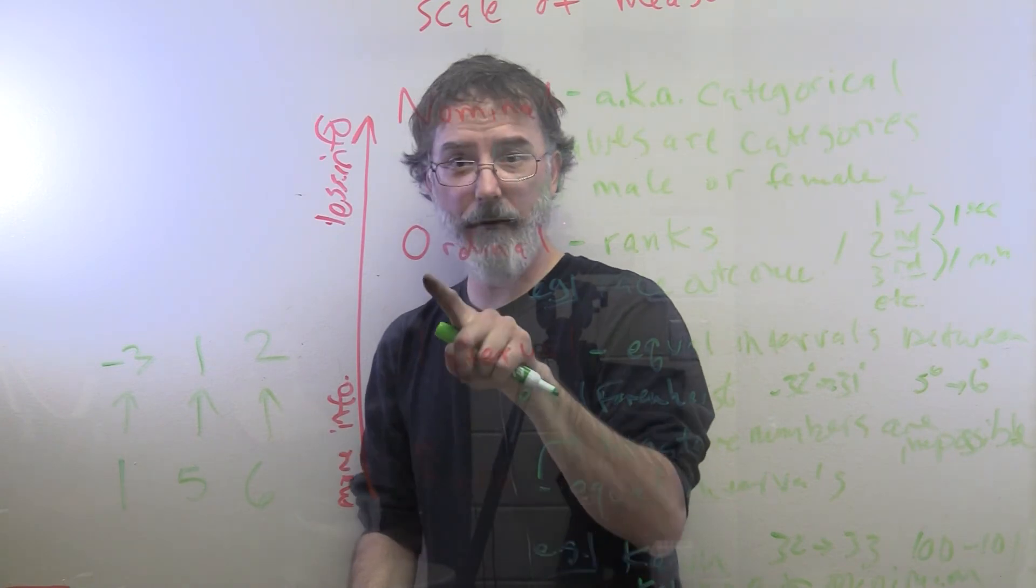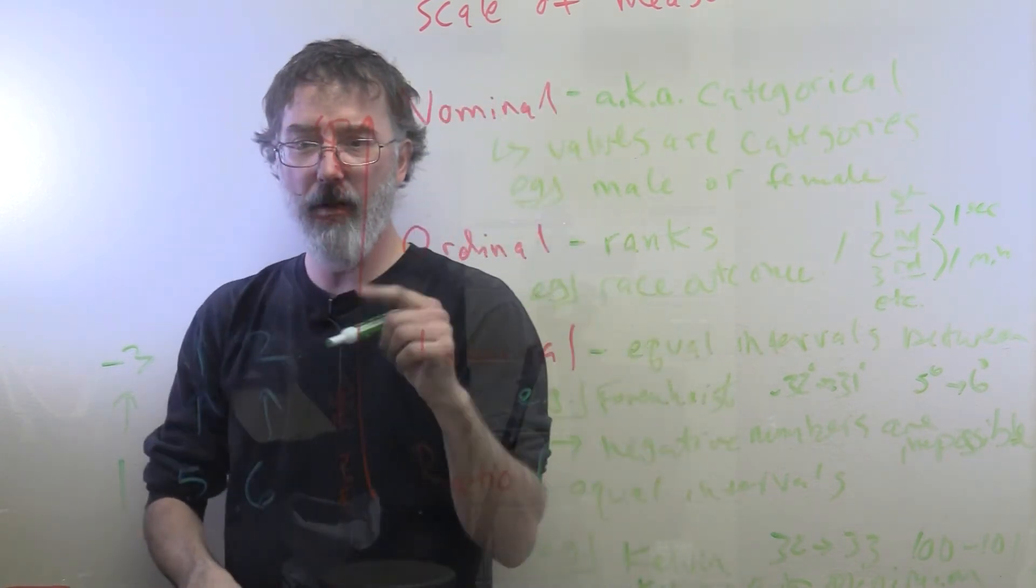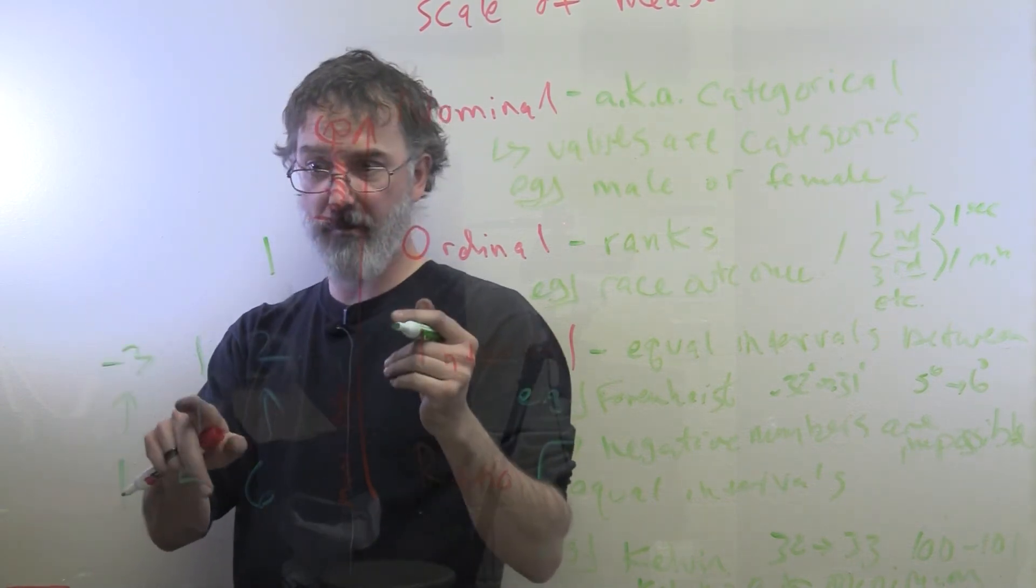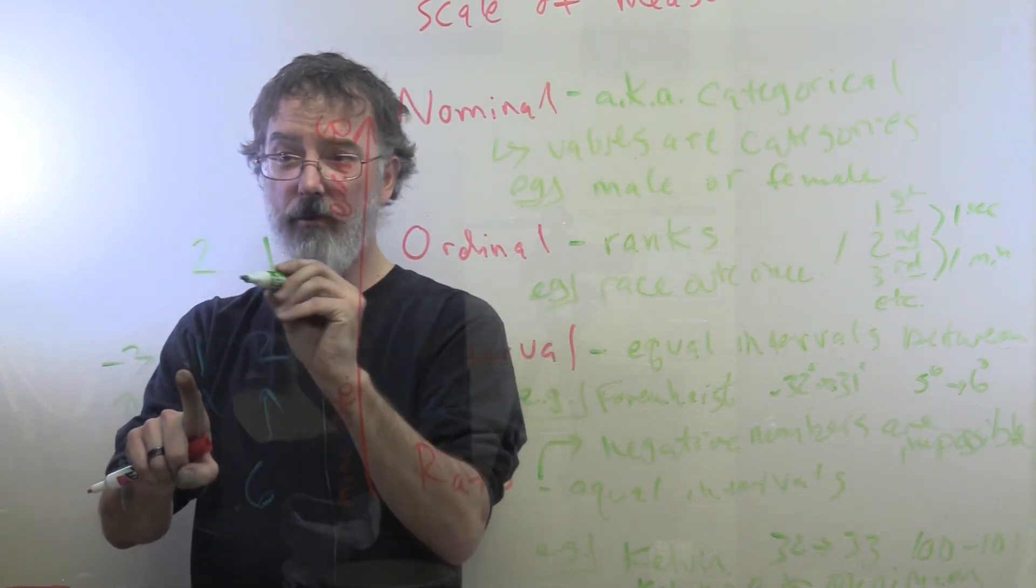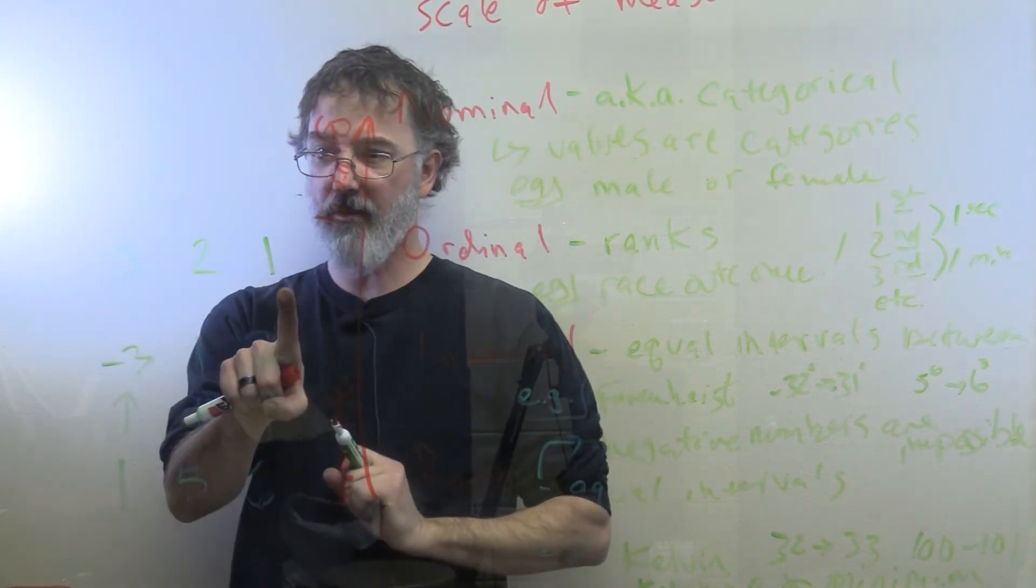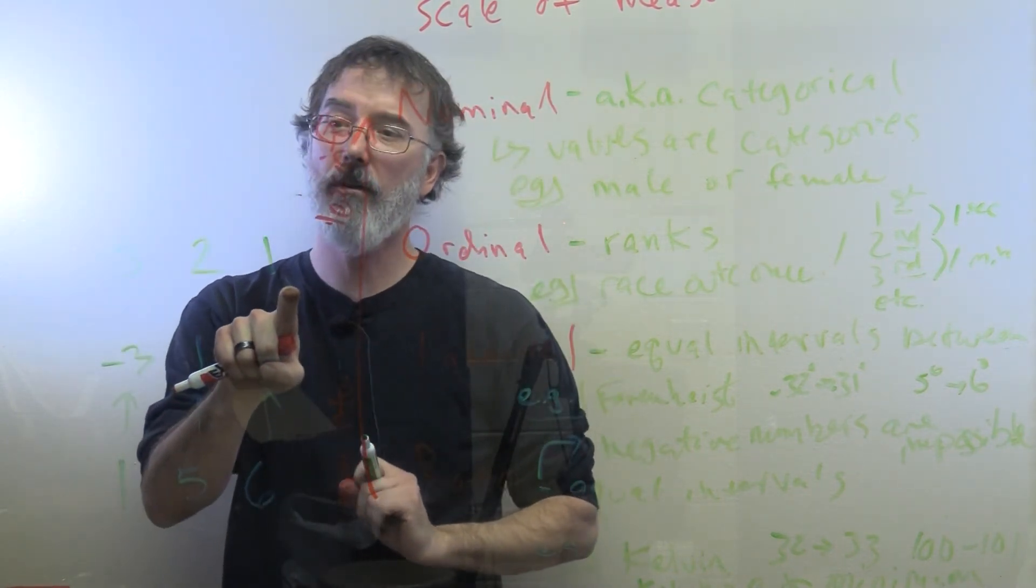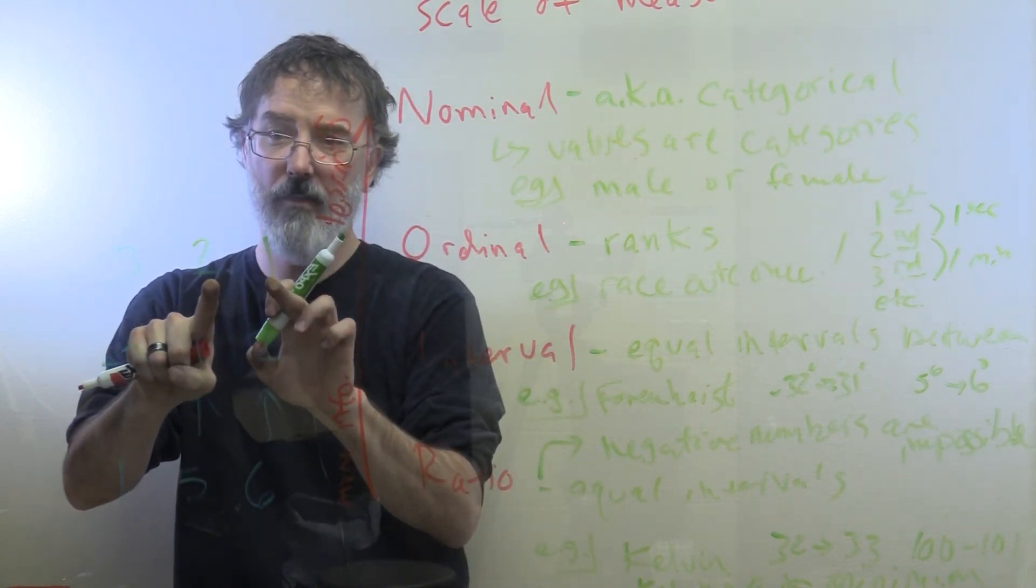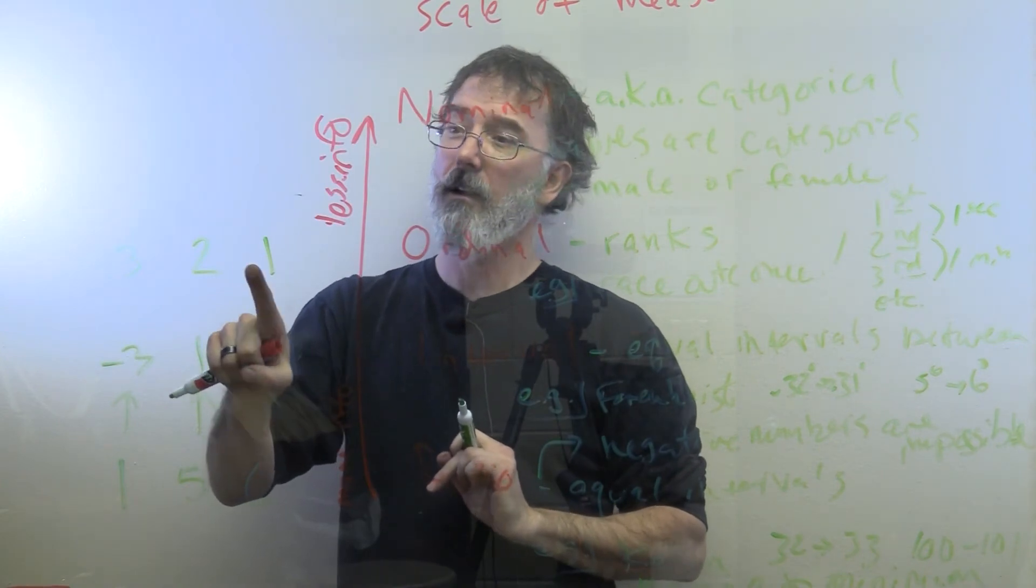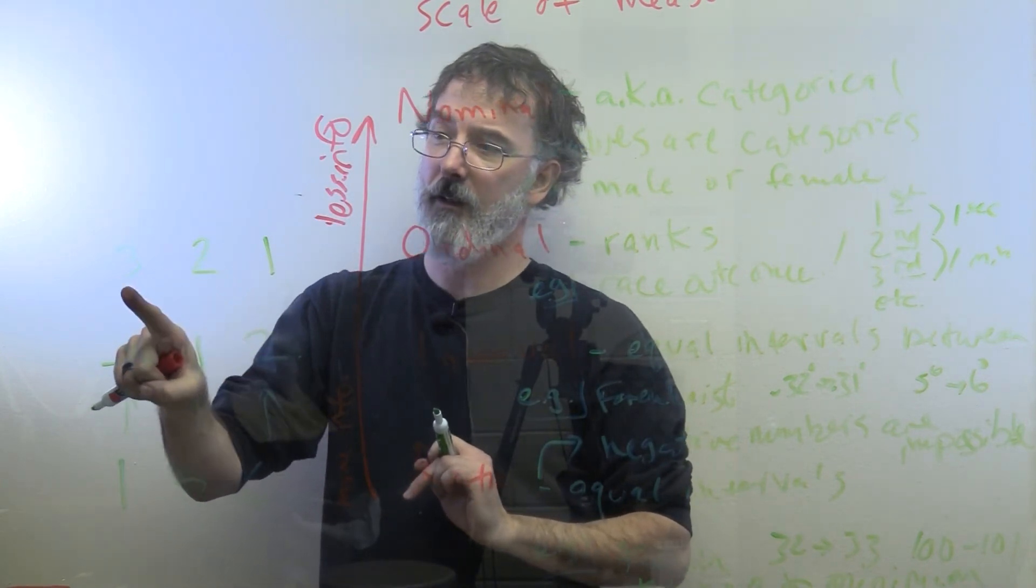We can actually further change this. We can transform it again into ordinal, where we could say the person with the most cookies gets number 1, first place. The person with the second number of cookies gets number 2, and the person with the least number of cookies gets number 3. Now we know this person had more cookies than everybody else, but we do not know how number 1 and 2 compared, or how number 1 and 2 compared to number 2 and 3. We just got the cookie winner, cookie silver place, and then the bronze.